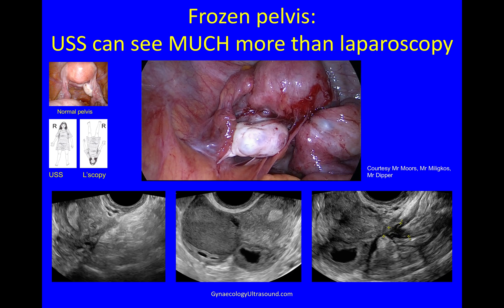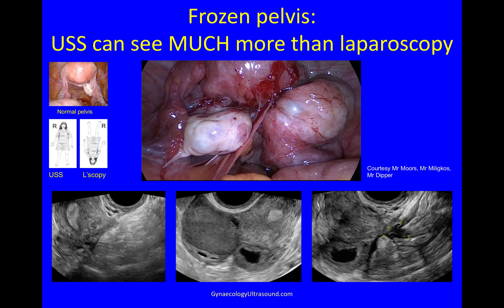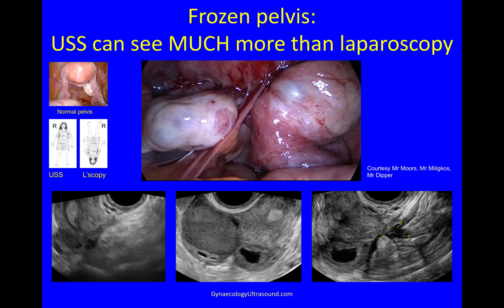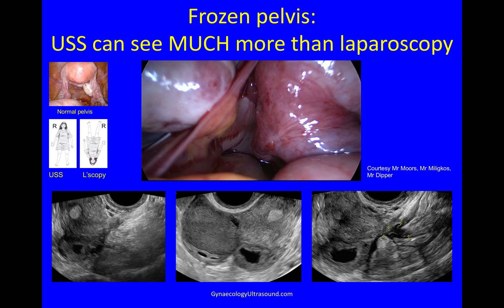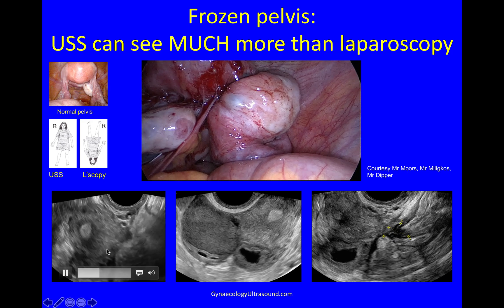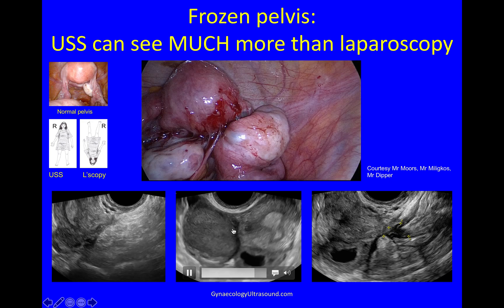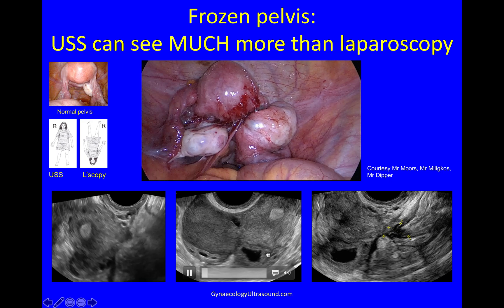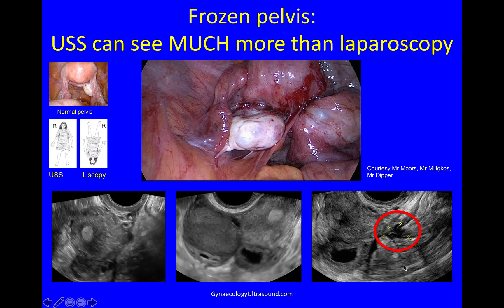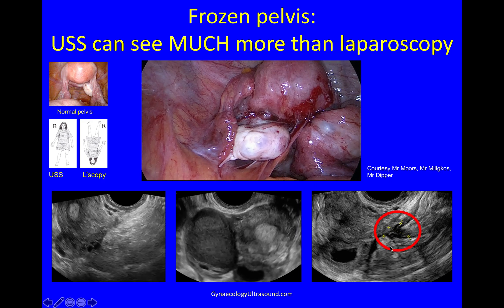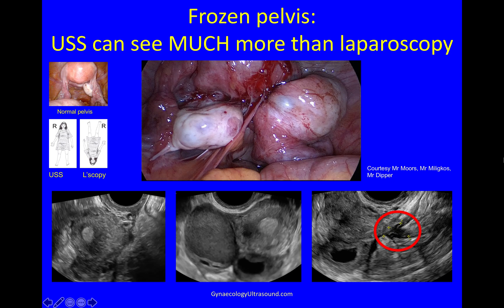This is an example of a patient with a frozen pelvis, to demonstrate how much more you can see on ultrasound than at laparoscopy. At ultrasound, we knew that the pelvis was frozen, we knew that she had a right ovarian endometrioma with adhesions of both ovaries to the back of the uterus, but also that she had a bowel nodule — and that was not obvious at diagnostic laparoscopy.